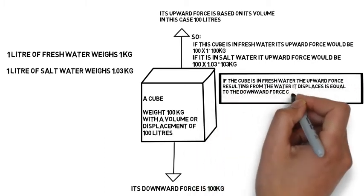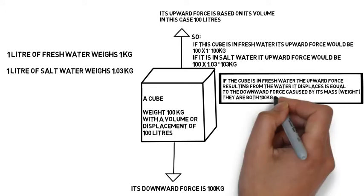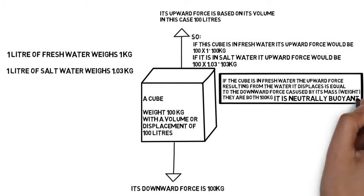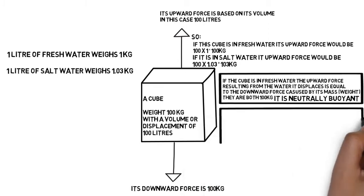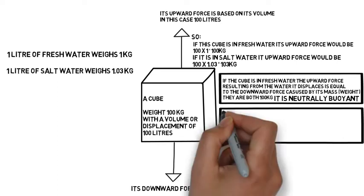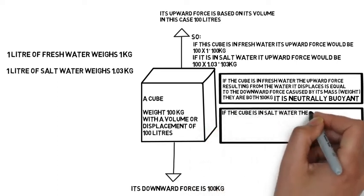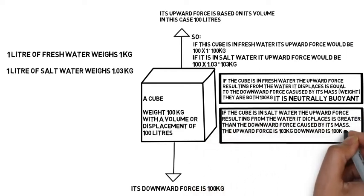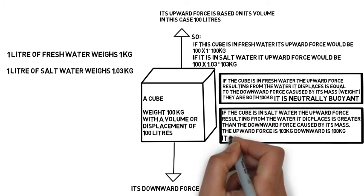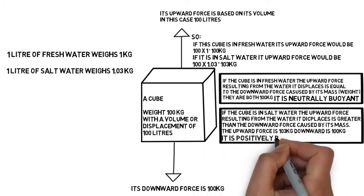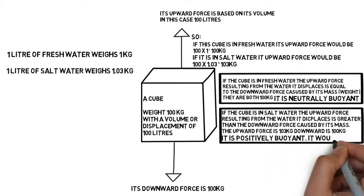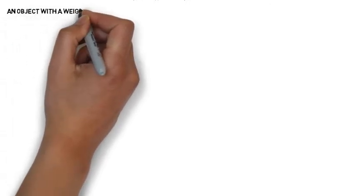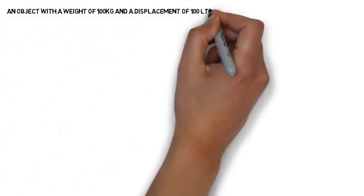The difference between the upward force and the downward force tells us what will happen to the object. In fresh water, this cube would be neutrally buoyant — the weight of water it displaces equals the weight of the object. In salt water, the downward force is still 100 kilograms but the upward force is 103 kilograms, so this cube would be positively buoyant and would float.